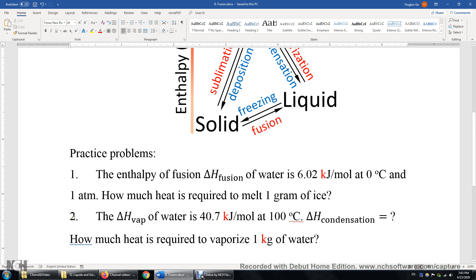Question number two, the enthalpy of vaporization of water is 40.7 kJ per mole at 100 degrees Celsius and 1 atm. Okay, what's the value of the enthalpy of condensation of water at this temperature and pressure? Second question, how much heat is required to vaporize one kilogram of water at 100 degrees Celsius and 1 atm pressure?